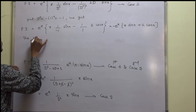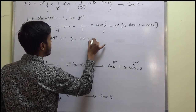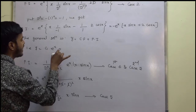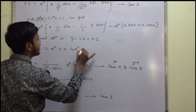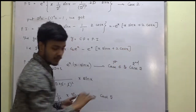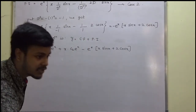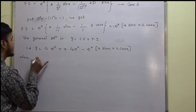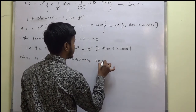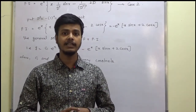Therefore, the general solution is y = CF + PI: y = (c₁ + c₂x)e^x − e^x(x·sin x + 2 cos x), where c₁ and c₂ are arbitrary constants. It is good practice to always write this. I hope this is clear to you. Thank you for watching this learning video and enjoy learning mathematics.